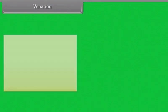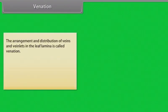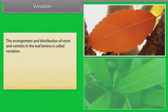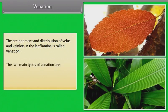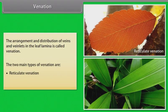Venation. The arrangement and distribution of veins and veinlets in the leaf lamina is called venation. The two main types of venation are reticulate and parallel.